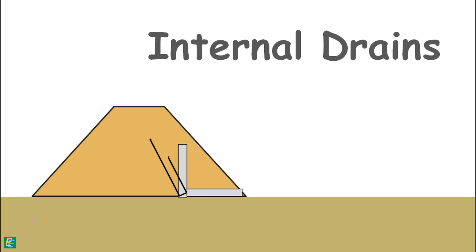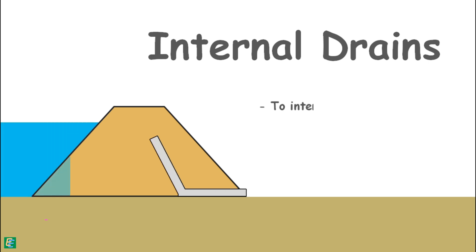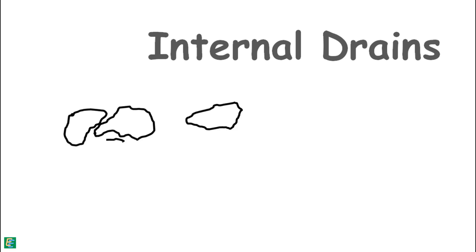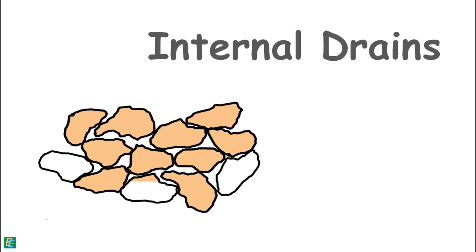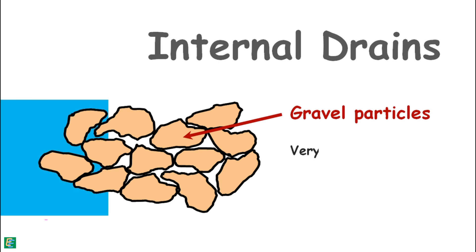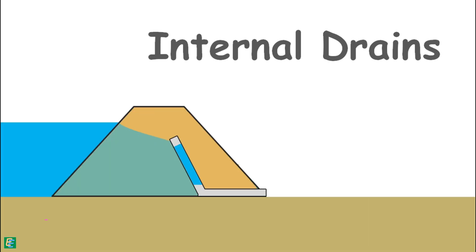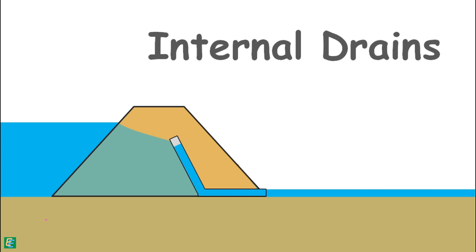The fifth component is the internal drains. An internal drain may be horizontal, vertical, or inclined. Its purpose is to intercept the seepage flow and prevent it from exiting the downstream slope of the dam. Drains are made using sand and gravel particles; gravels can be considered a medium of effectively infinite permeability compared to the dam material, enabling water to flow through drains without significant head loss and be carried out of the dam safely.